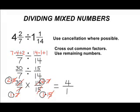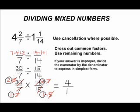So now we simplify our improper fraction, which is 4 over 1. And 4 divided by 1 is 4, and that's how we express it in simplest form. So 4 and 2 7ths divided by 1 and 1 14th gives us an answer of 4.